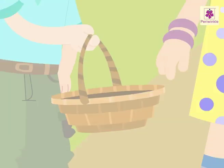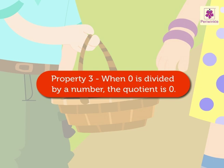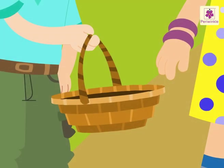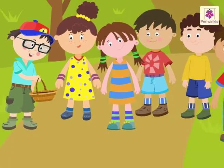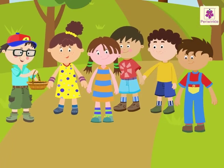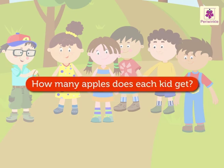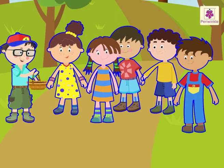Property three: when zero is divided by a number, the quotient is zero. Oops — there are zero apples in the basket and the number of kids is six. How many apples does each kid get?